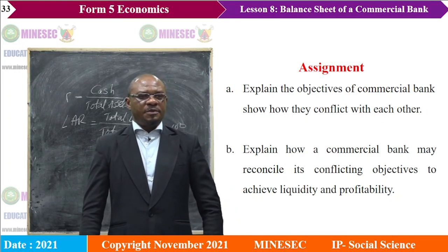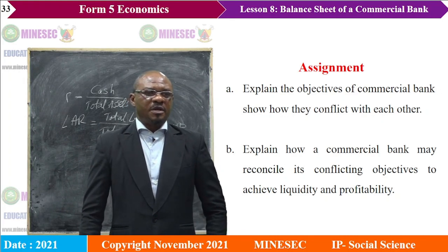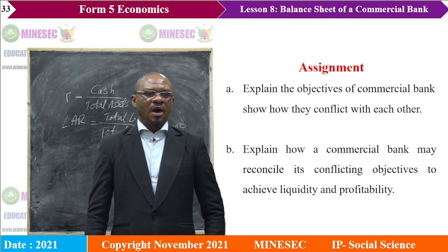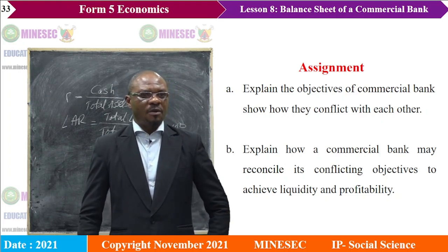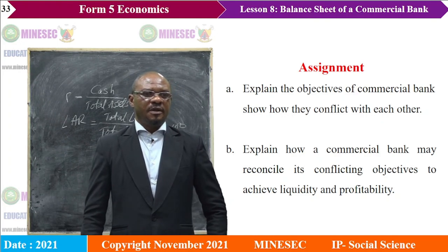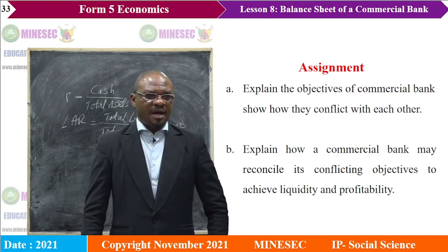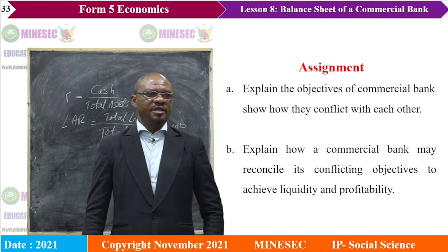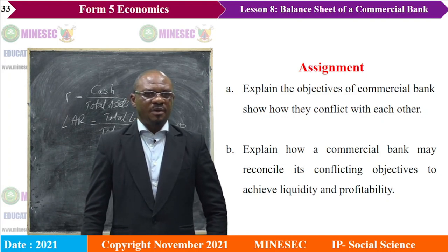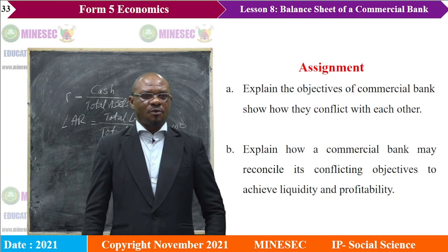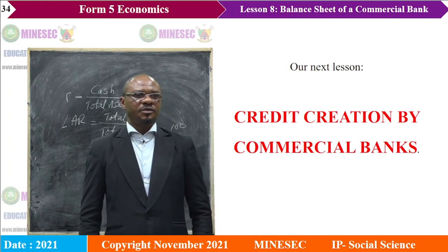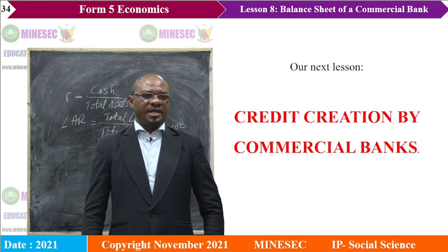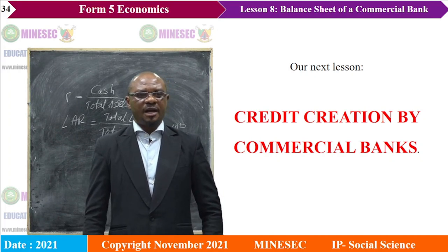Assignment: A, explain the objectives of commercial banks and show how they conflict with each other. B, explain how a commercial bank may reconcile its conflicting objectives to achieve liquidity and profitability. Our next lesson shall be credit creation by commercial banks.